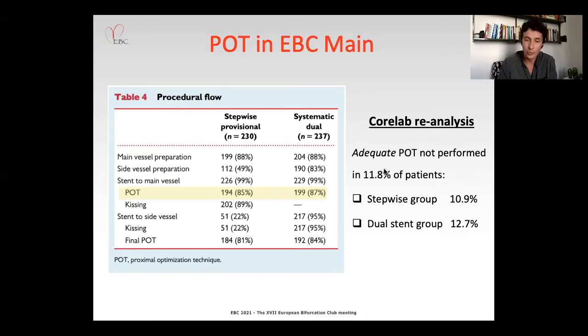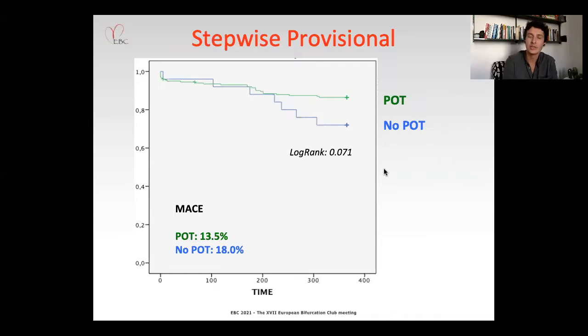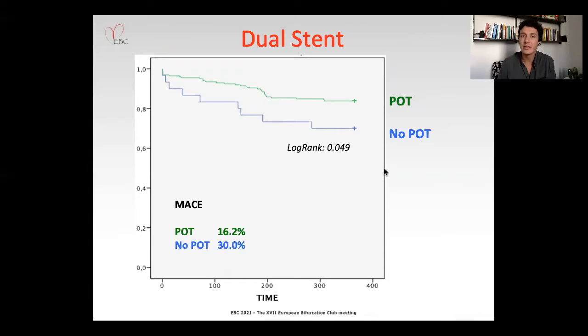What was very striking to see is this Kaplan-Meier curve showing that the outcome of patients who did not undergo correct POT was extremely worse than those who did. Events were doubled in patients who did not undergo correct POT for the composite endpoint at 12 months, and this was maintained in both groups. In the Kaplan-Meier for patients randomized to the stepwise provisional strategy, although not statistically significant, a large numerical difference appeared over time; statistical significance was reached in the dual-stent strategy group.